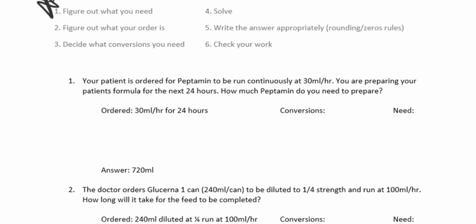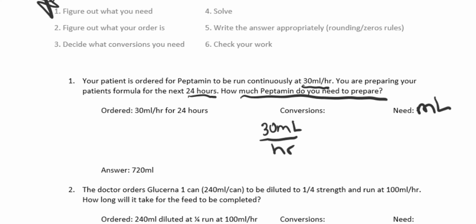Your patient is ordered for Peptamin to run continuously at 30 mLs per hour. You're preparing your patient's formula for the next 24 hours. How much Peptamin do you need to prepare? What we need is a volume in mLs. What is ordered is 30 mLs per hour for 24 hours. So our conversion: 30 mLs/hour × 24 hours — we cross off hours — and 30 times 24 gives us 720 mLs.